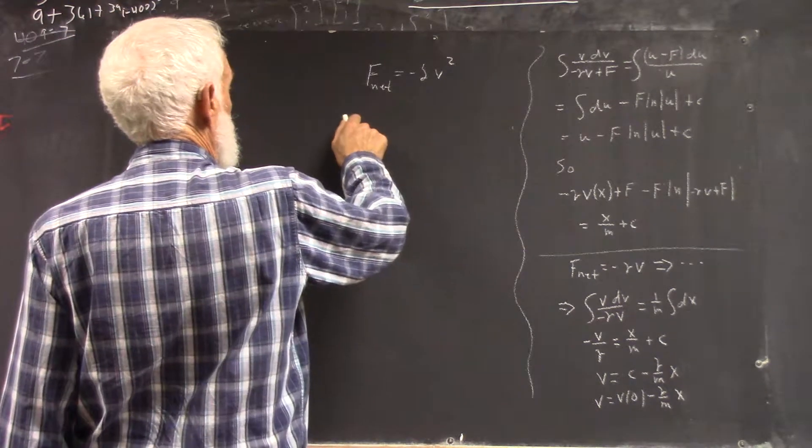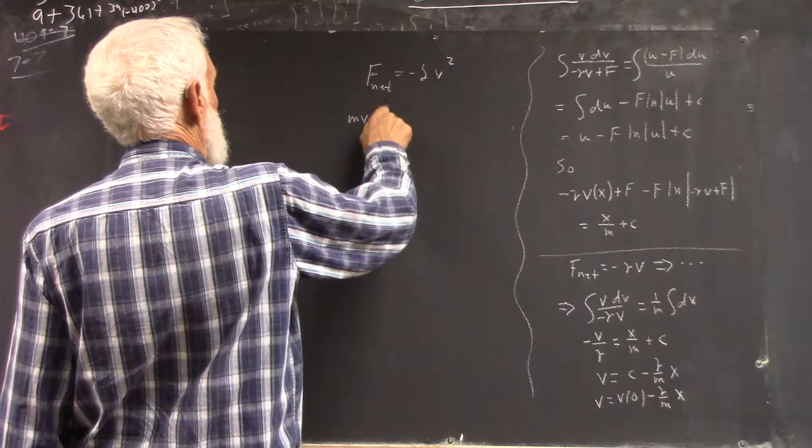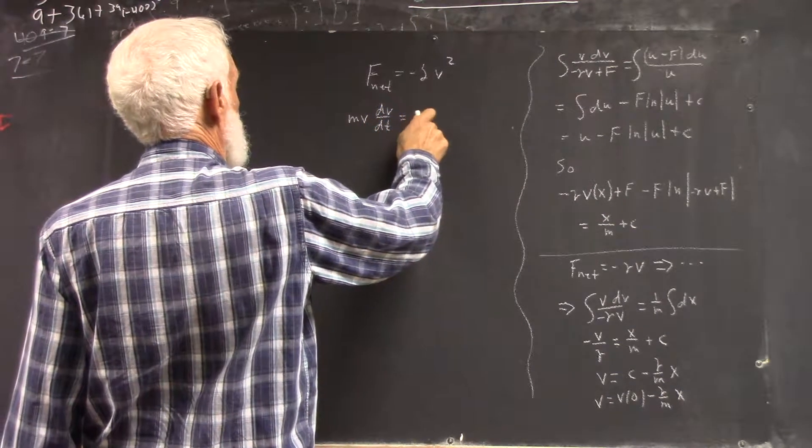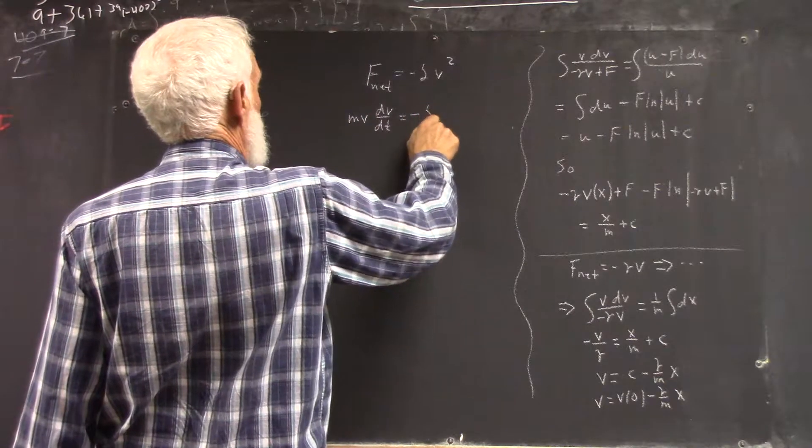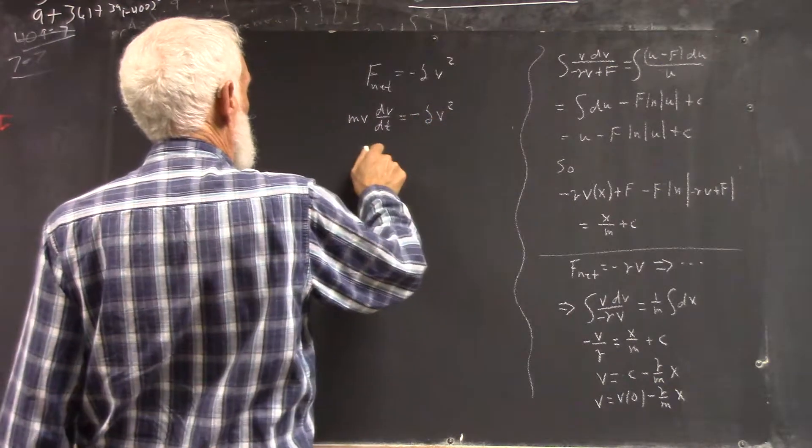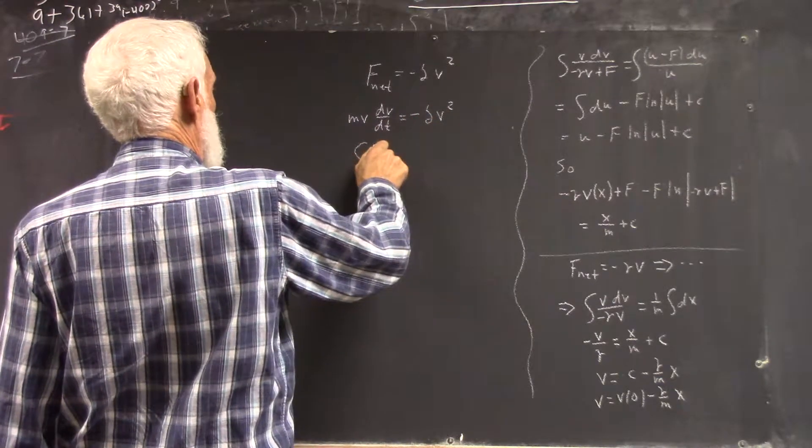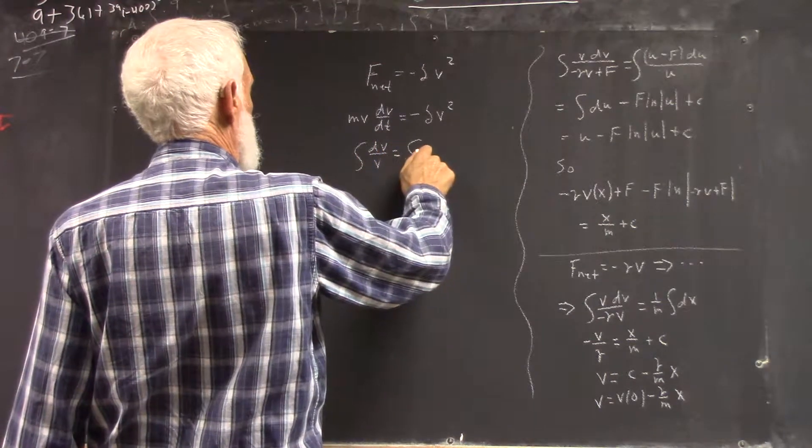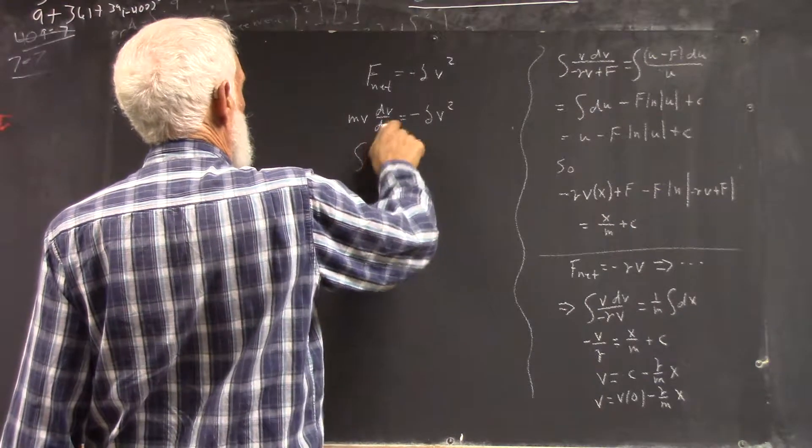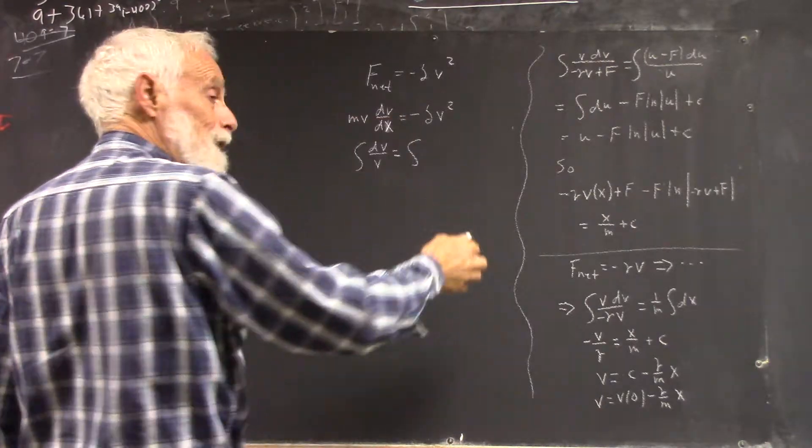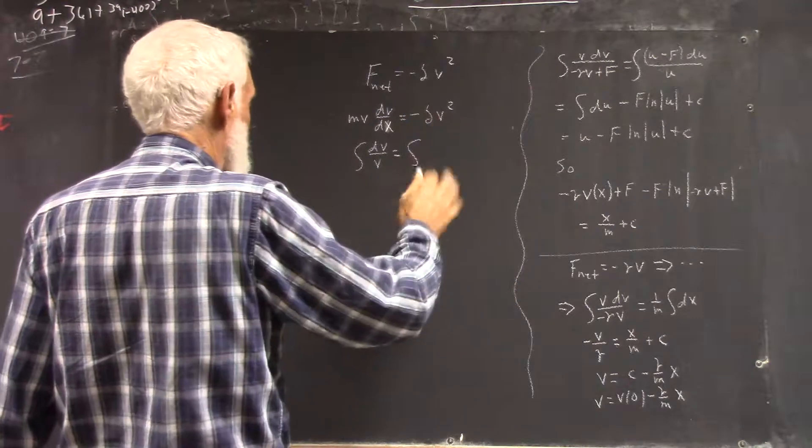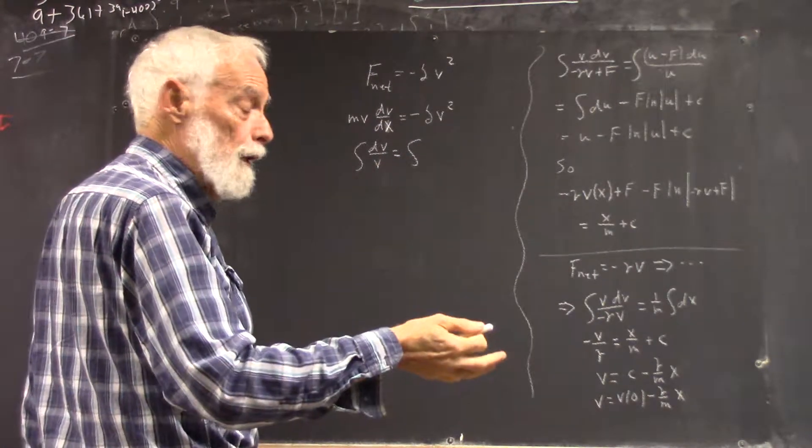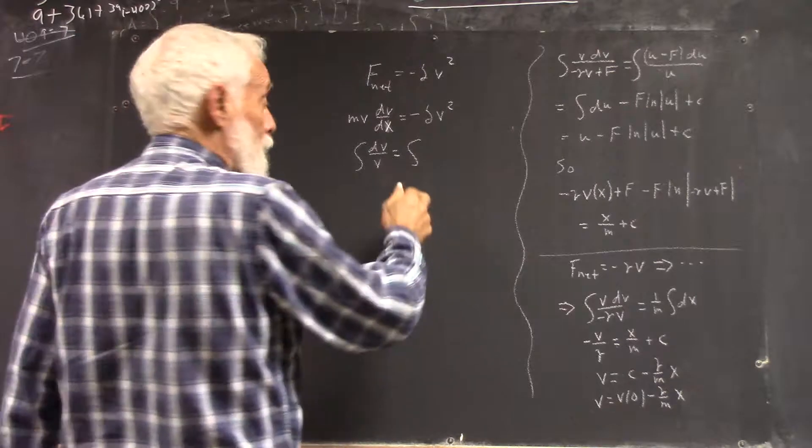Then you have mv dv/dt equals negative delta v squared, which leads to the integral of dv over v equals the integral... dv/dt... I can't listen to what my brain is doing, mainly because my brain wasn't doing anything. Okay, so, we have this.